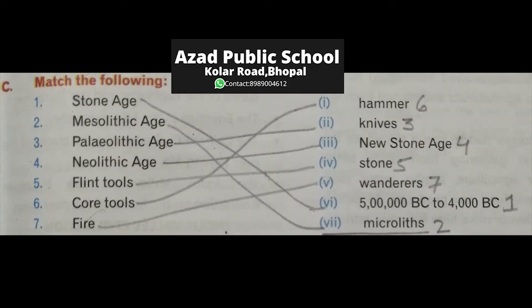Match the pairs — note the order: 6, 3, 4, 5, 7, 1, 2. Stone age is related to 50,000 BC to 4,000 BC. Mesolithic age is related to microlith. Paleolithic age is related to knives. Neolithic age is related to new stone age, and flint tools related to tools, core tools to hammer, and fire related to wonders.